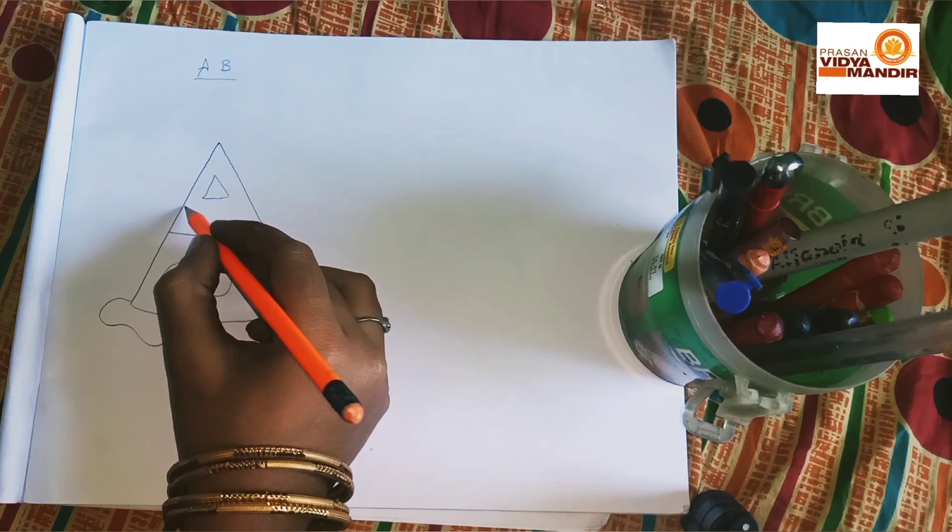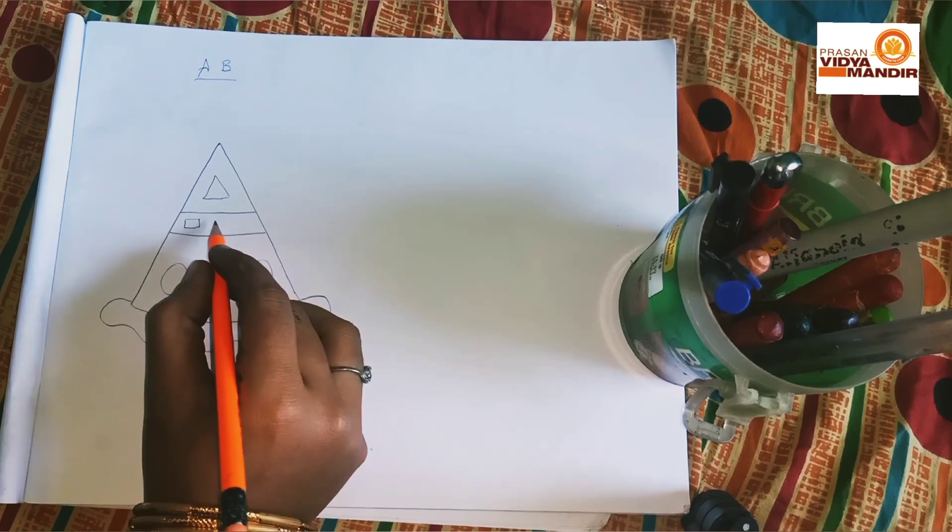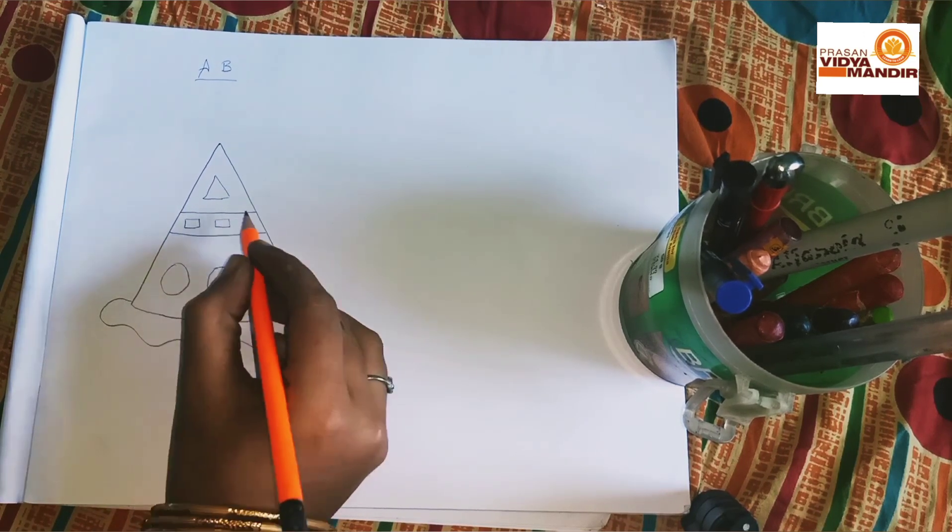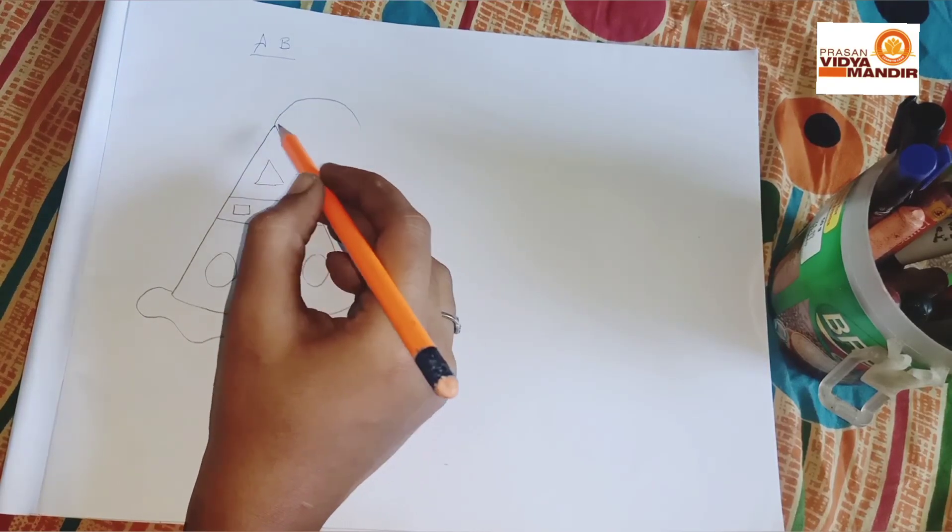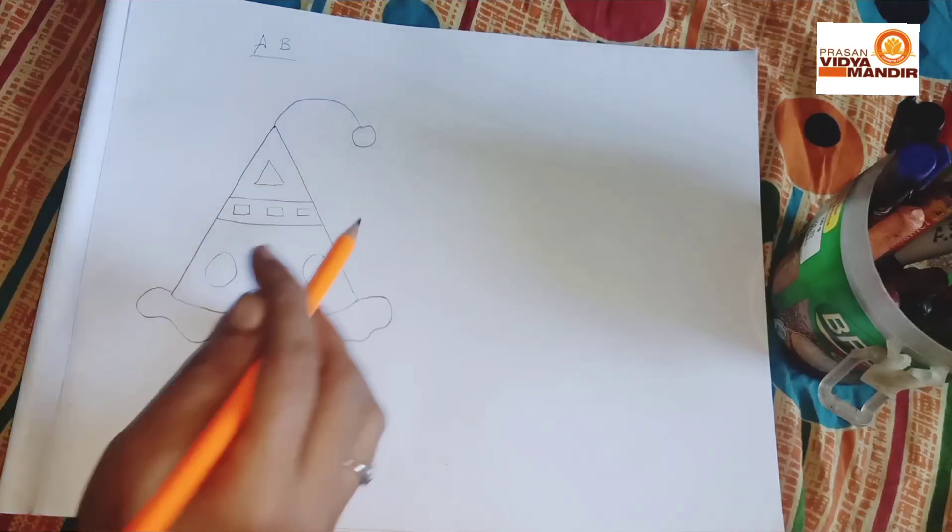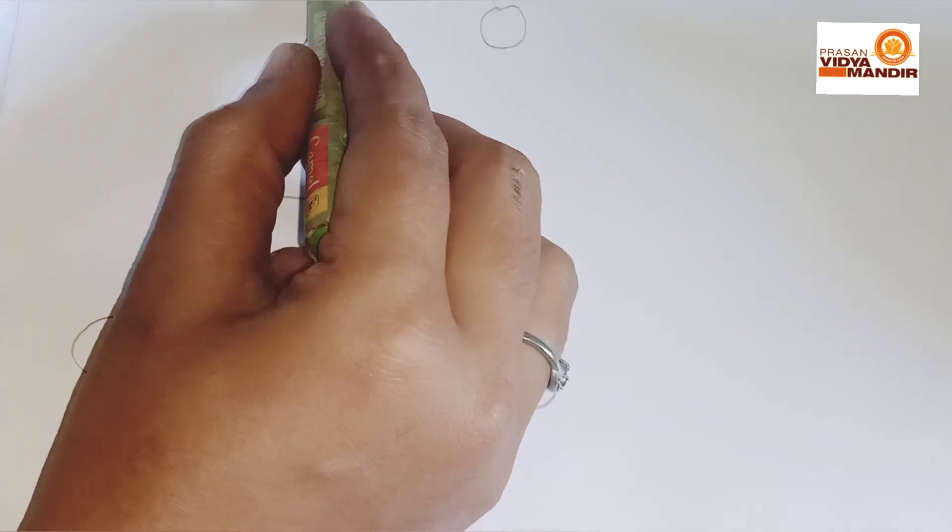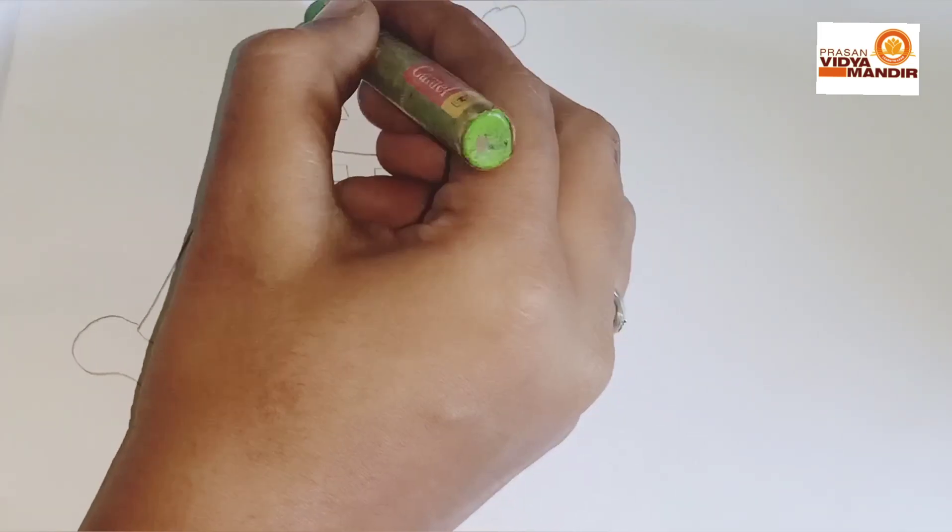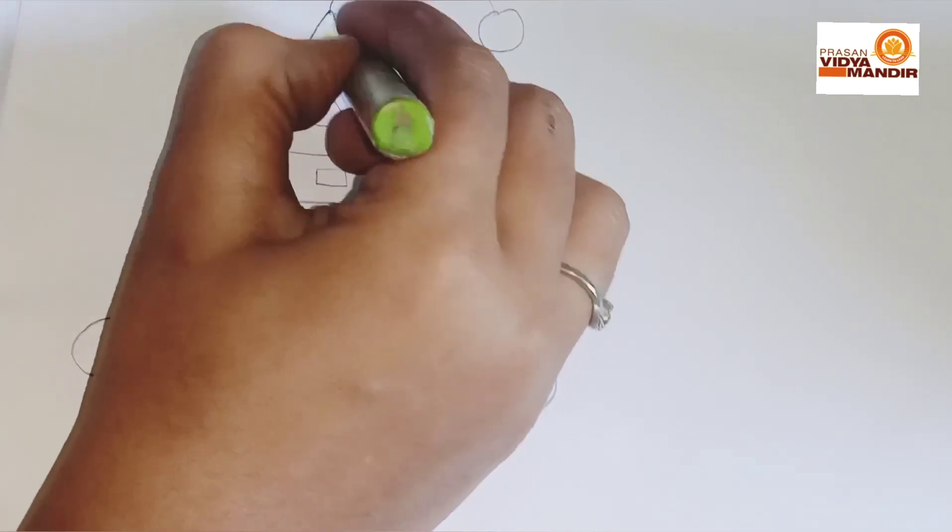This helps the children to understand the shapes also. Now your cap is ready to color. Use different colored crayons to color the cap. Children, you can give your favorite color.